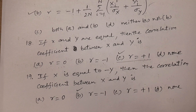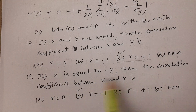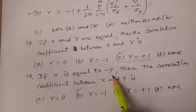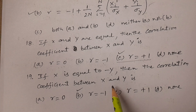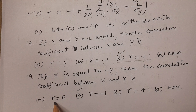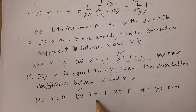One more question: if x equals minus y, then the correlation coefficient between x and y. As already explained, if x equals minus y, then r equals minus one. Options are R equals zero, R equals minus one, R equals plus one, none. The answer is option B, r equals minus one.